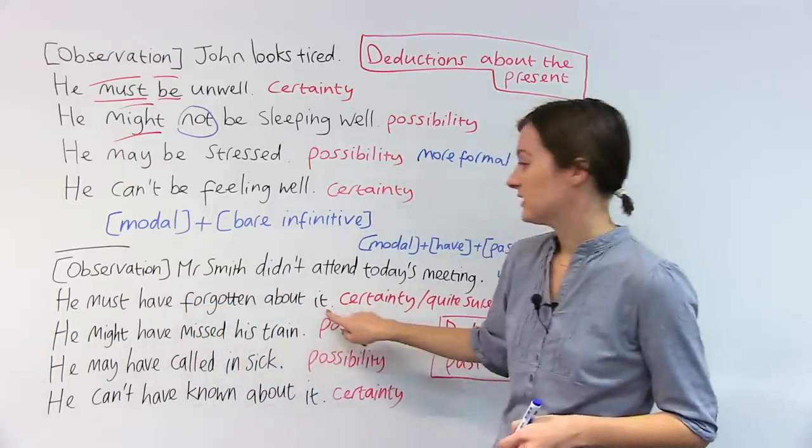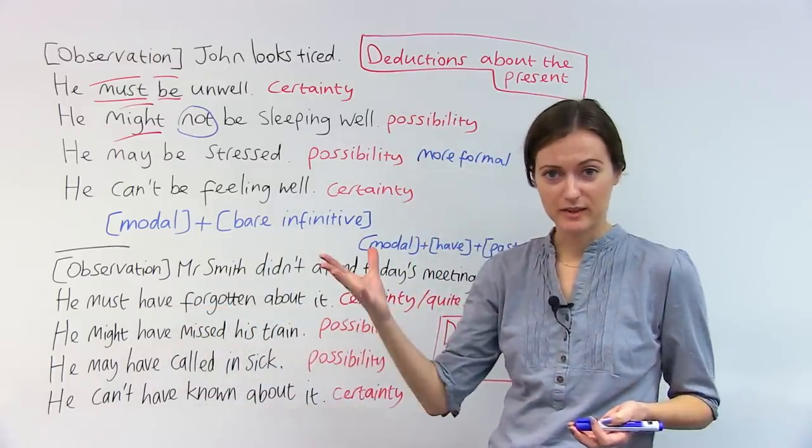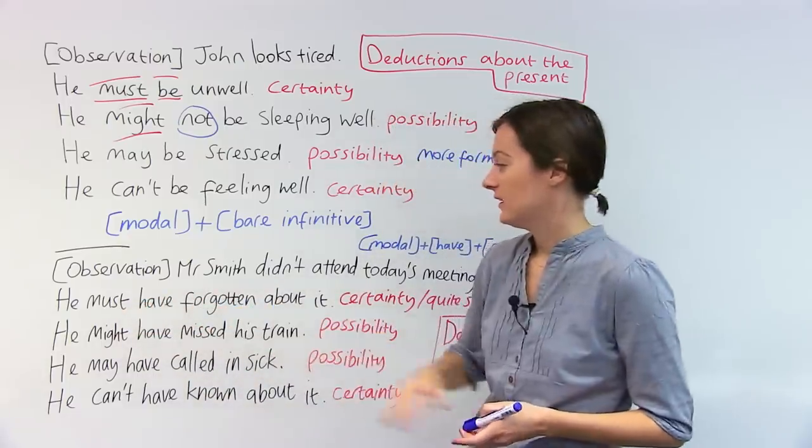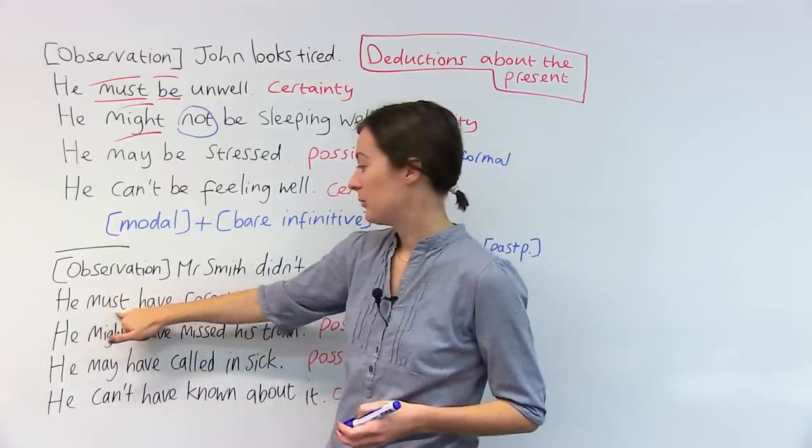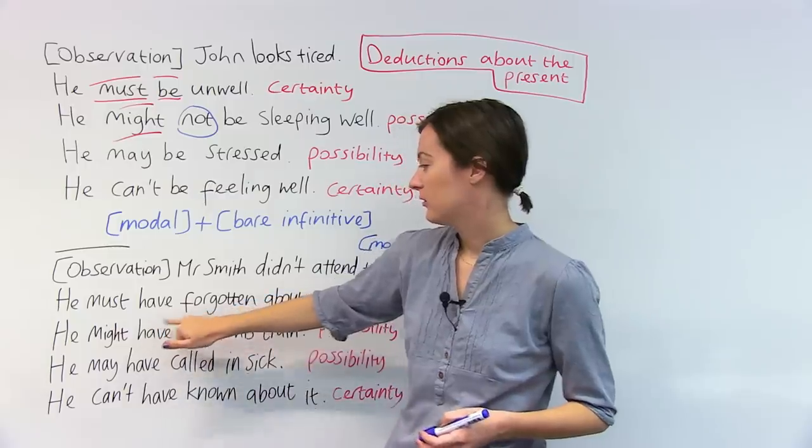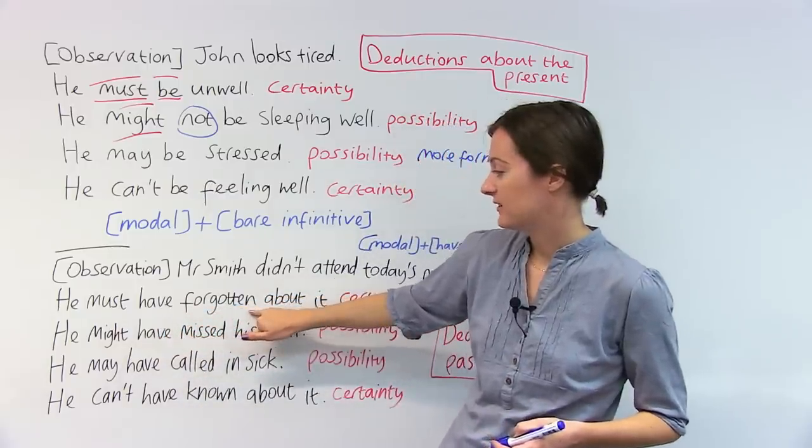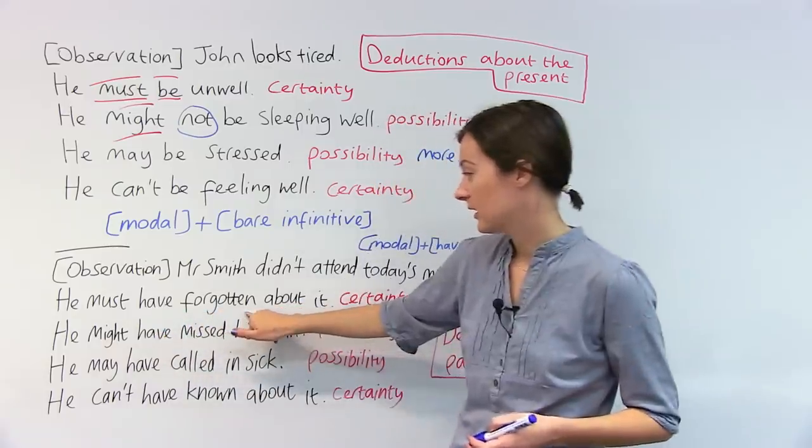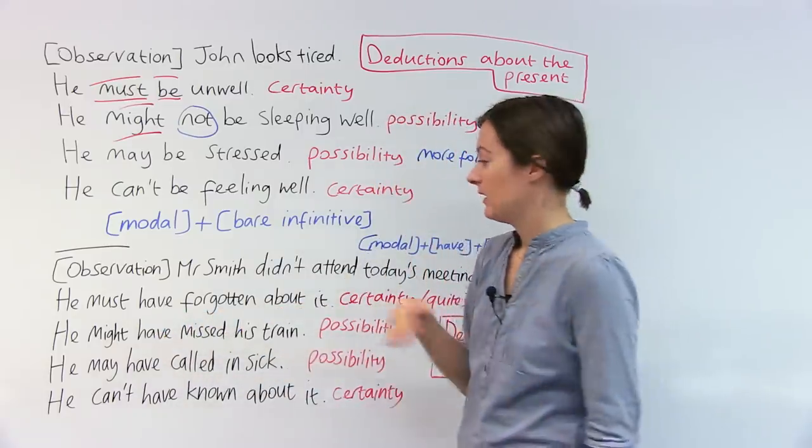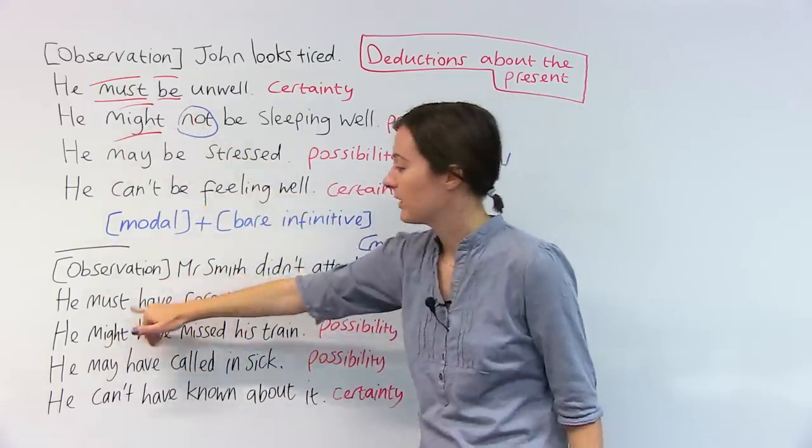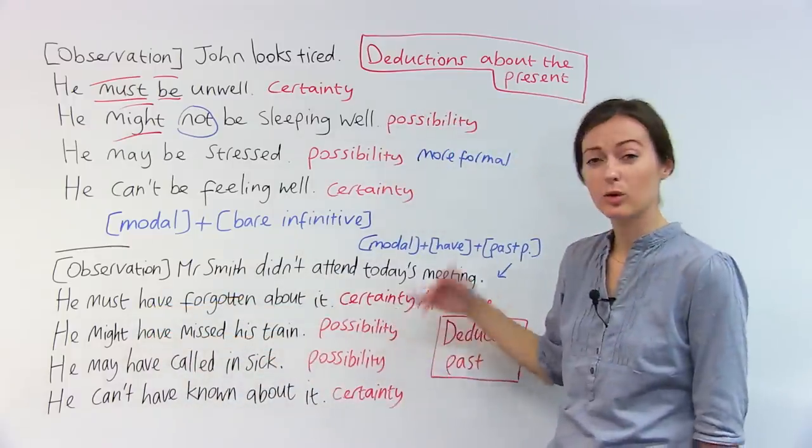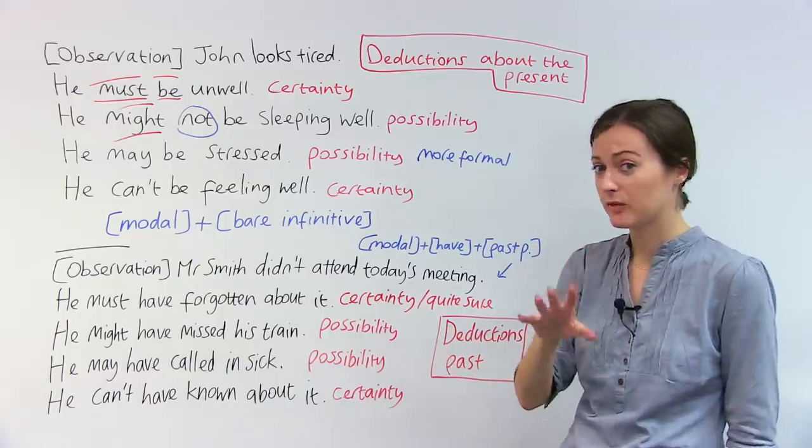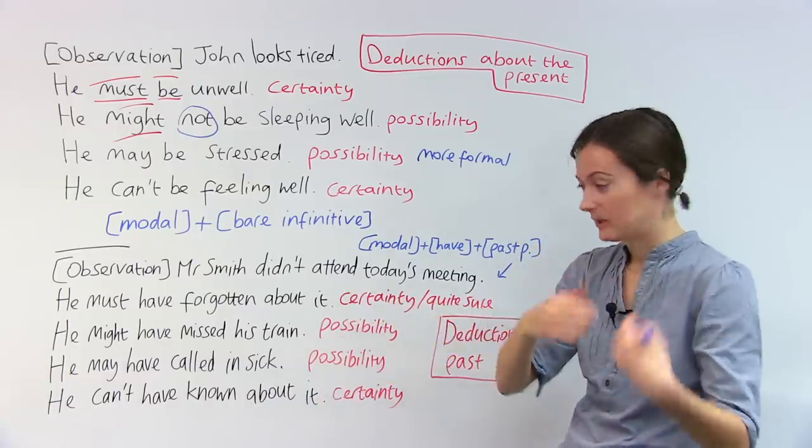He must have forgotten about it. I know Mr. Smith, I know he's forgetful. Therefore, my deduction is he must have forgotten. Here's the structure. Modal verb, then followed by have, followed by the past participle. This verb is forget, the past participle is forgotten. What does it mean? If we're using must, it's the same. Must means certainty, you're quite sure. You know him well and you're quite sure that he forgot the meeting. Because again, we're talking about something in the past.